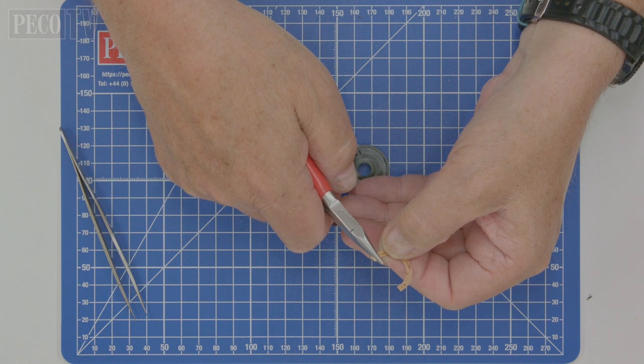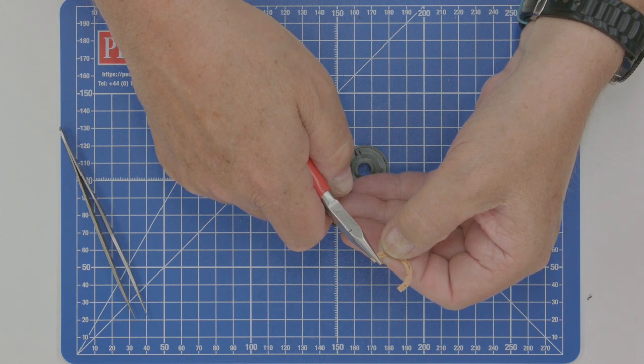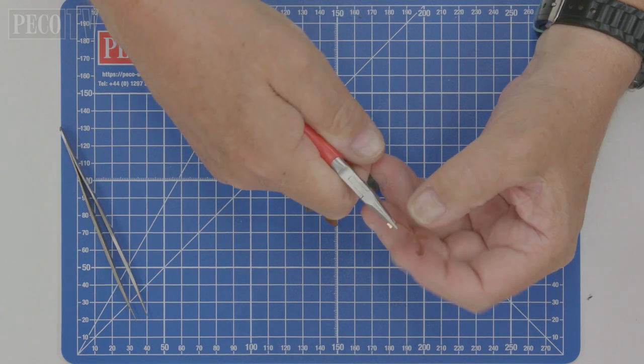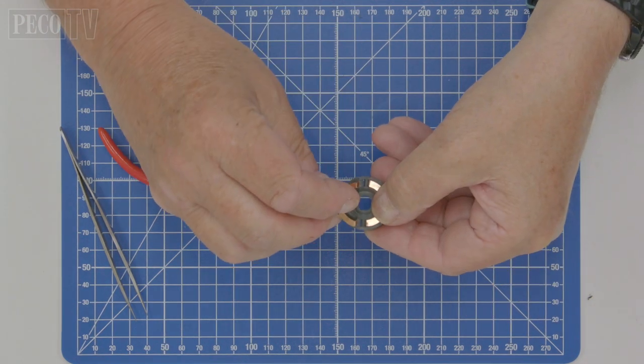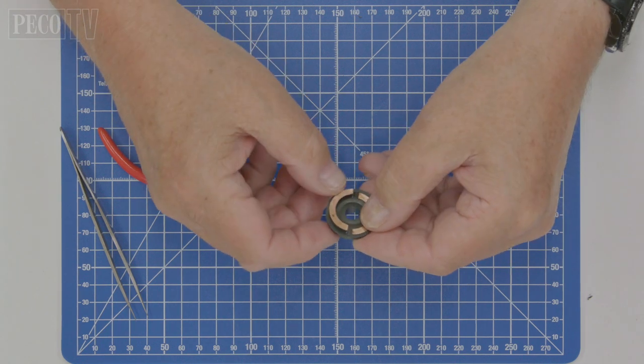Bend all three tags on each of the two contacts down at 90 degrees with a pair of pliers. Fit the two contacts into the recesses and bearings.